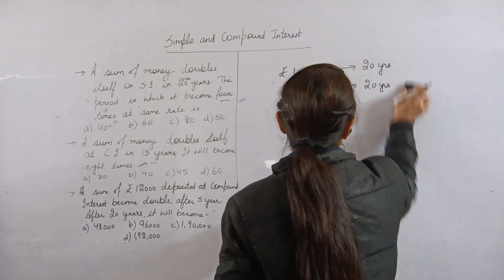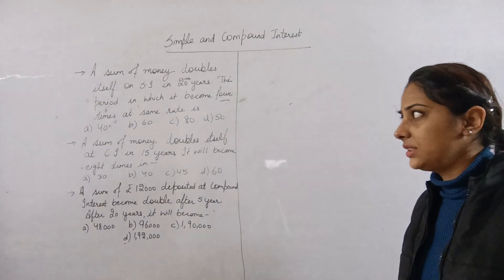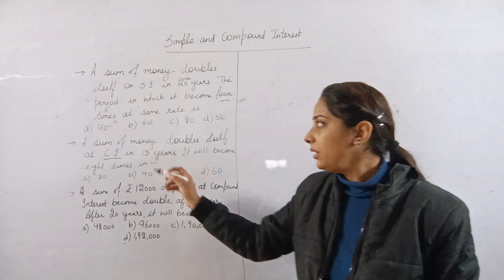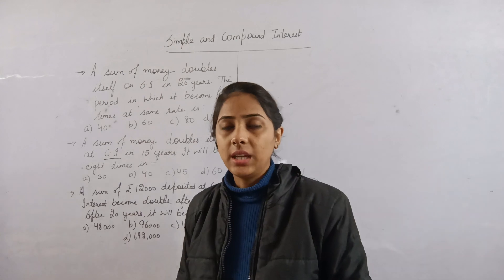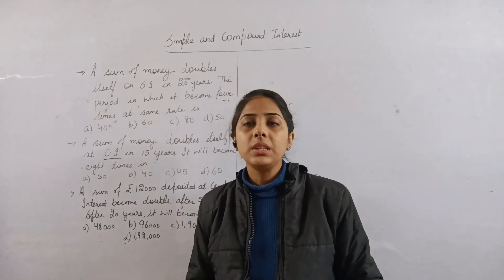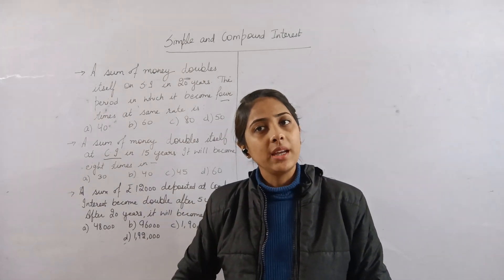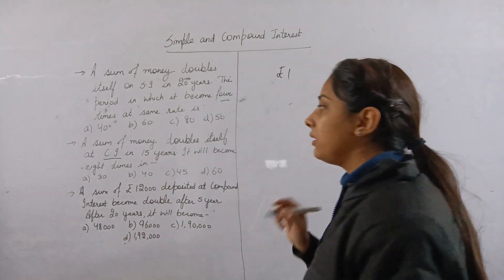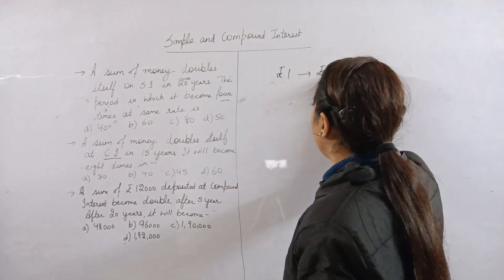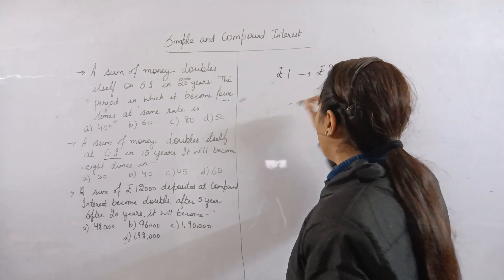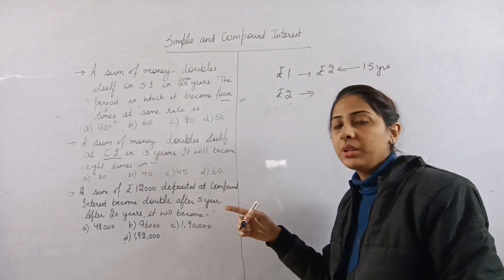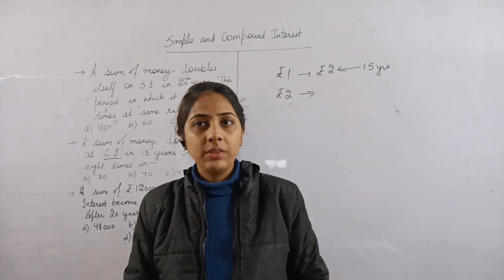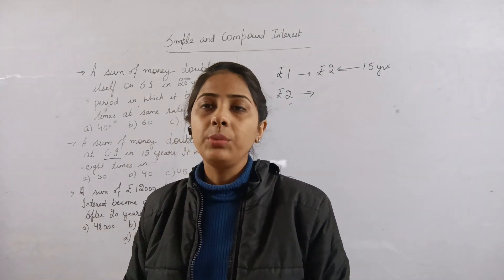Next question: A sum of money doubles itself at compound interest in 15 years. It will become 8 times in how much time? With compound interest, the concept is different from simple interest, as I explained in the previous video.